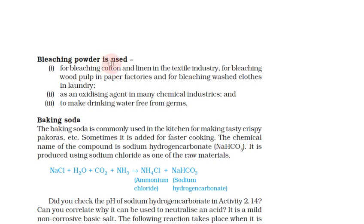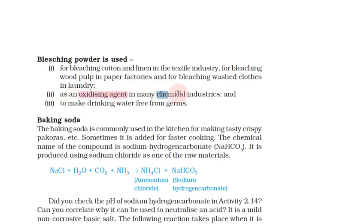Uses of bleaching powder: for bleaching cotton and linen in textile industries, bleaching wood pulp in paper factories, bleaching washed clothes in laundry, and as an oxidizing agent in chemical industries.